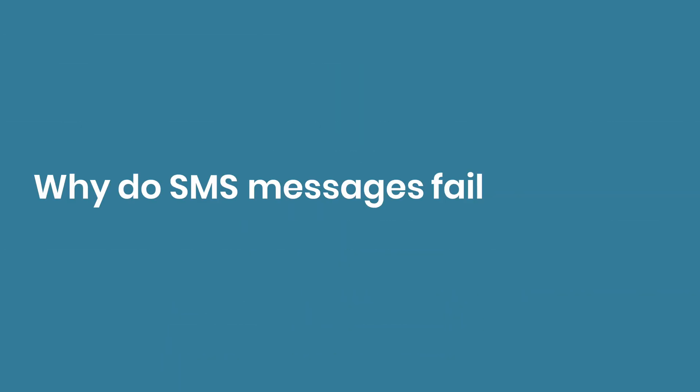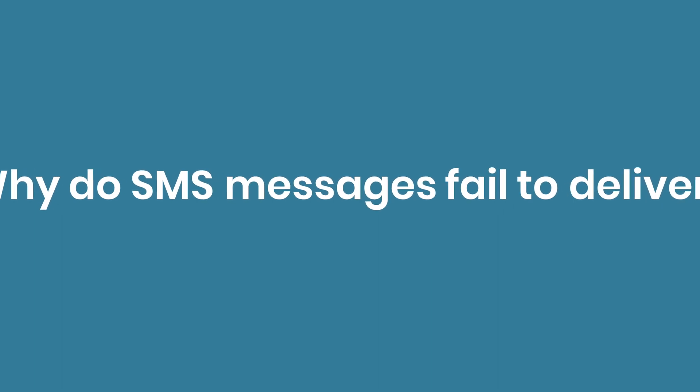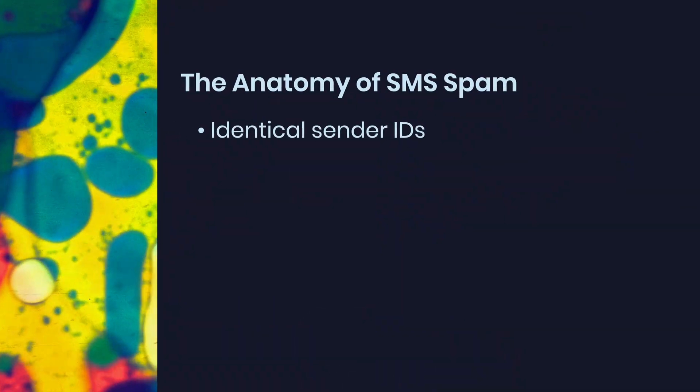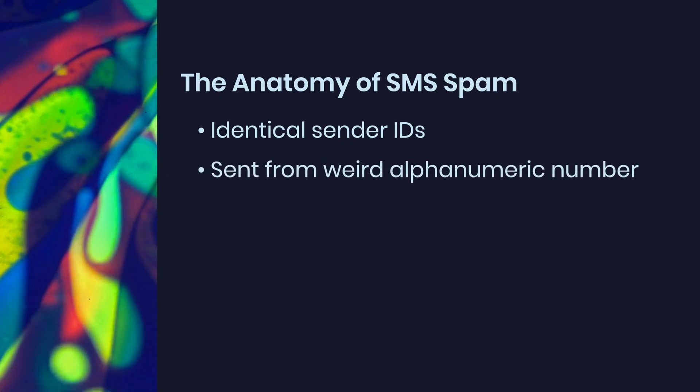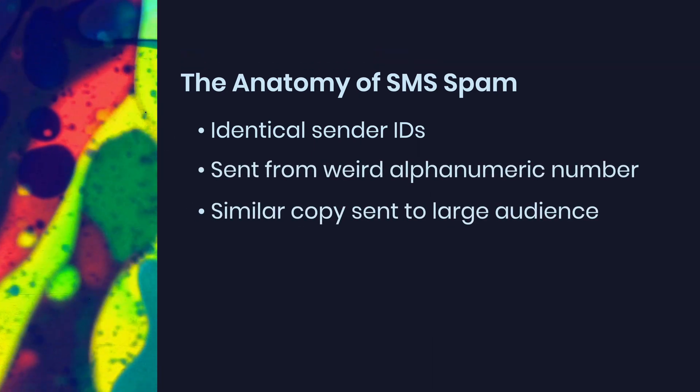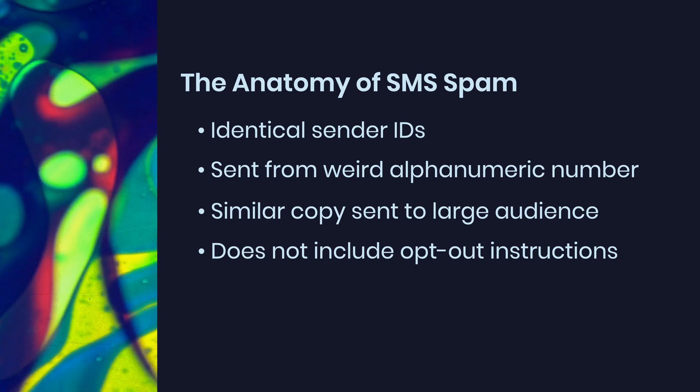Why do SMS messages fail to deliver? First, spam filters. When you send an SMS campaign, your messages pass through carriers' filters, which are designed to weed out spam. What does a spam text message look like? It comes from identical sender IDs or a weird alphanumeric number. You get similar copy sent to a large audience, and it doesn't include opt-out instructions. Personalizing your text messages and sending broadcasts over a period of time helps out quite a bit.